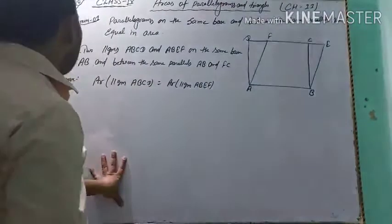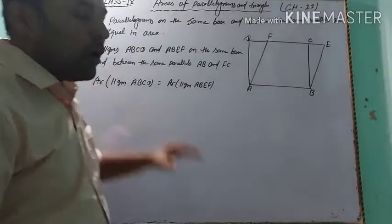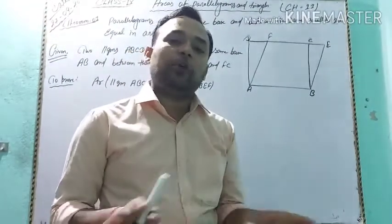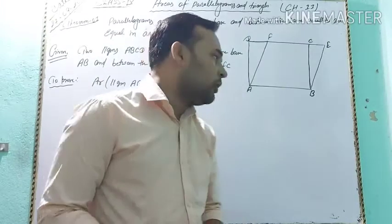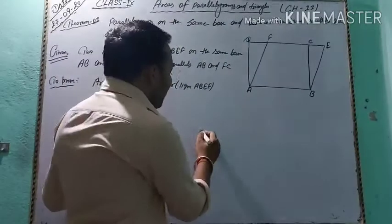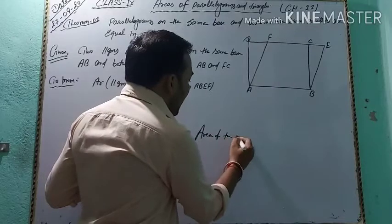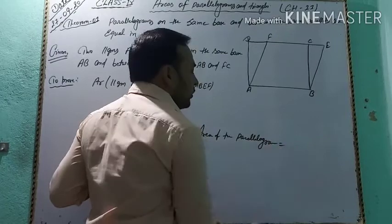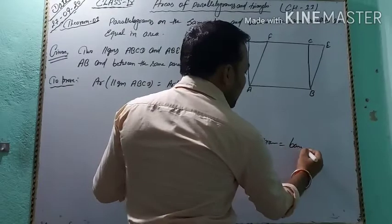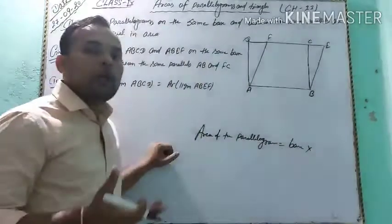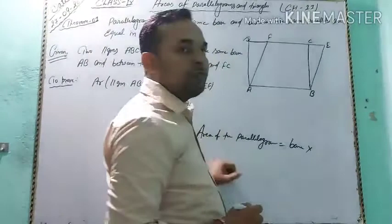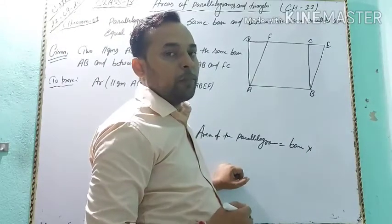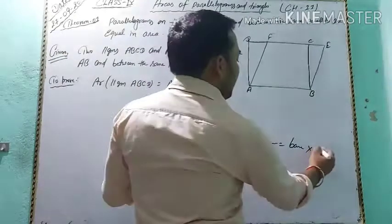My first theorem is Theorem Number 1: Parallelograms on the same base and between the same parallels are equal in area. First of all, students, what is the area of the parallelogram? Area of the parallelogram is equal to base multiplied by perpendicular height — it means the distance between any pair of parallel sides. So, base into height.